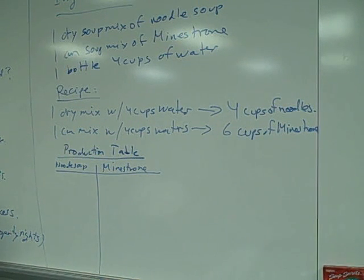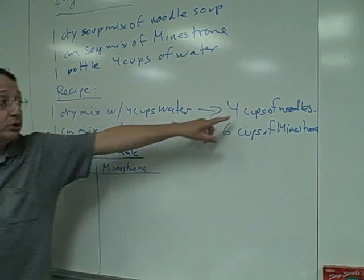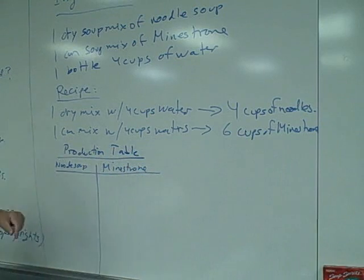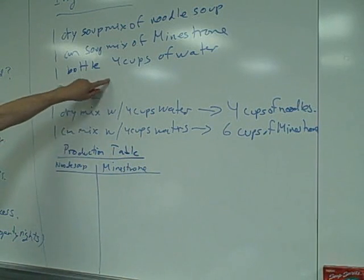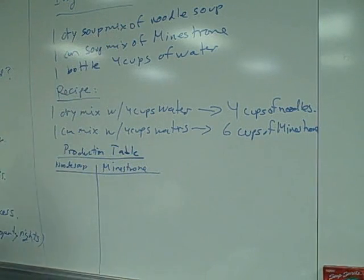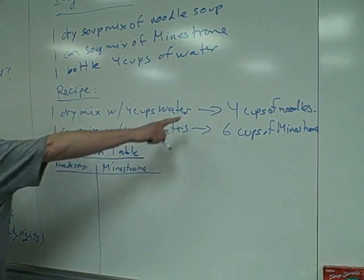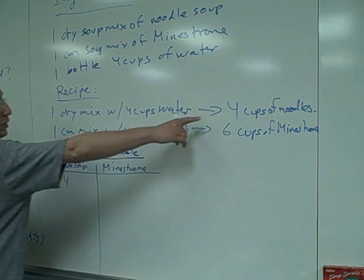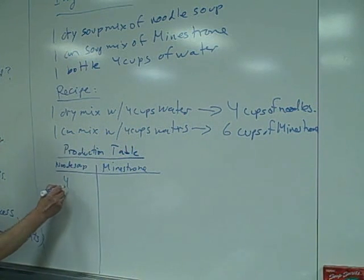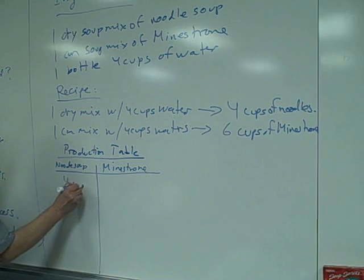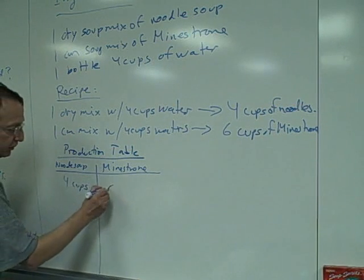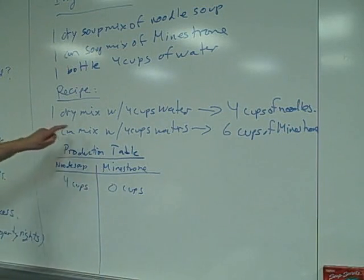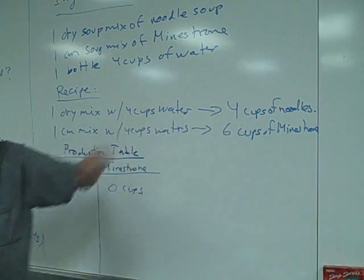I'm going to write the extremes in the first line and the other extreme in the last line, and then I'll look at the in-betweens. Let me start with one extreme: all noodle soup and no minestrone. So we mix the four cups of water with the dry soup mix. If I mix the four cups of water with the dry soup mix, I get how many cups of noodles? Four. And how many cups of minestrone? Zero. Four.